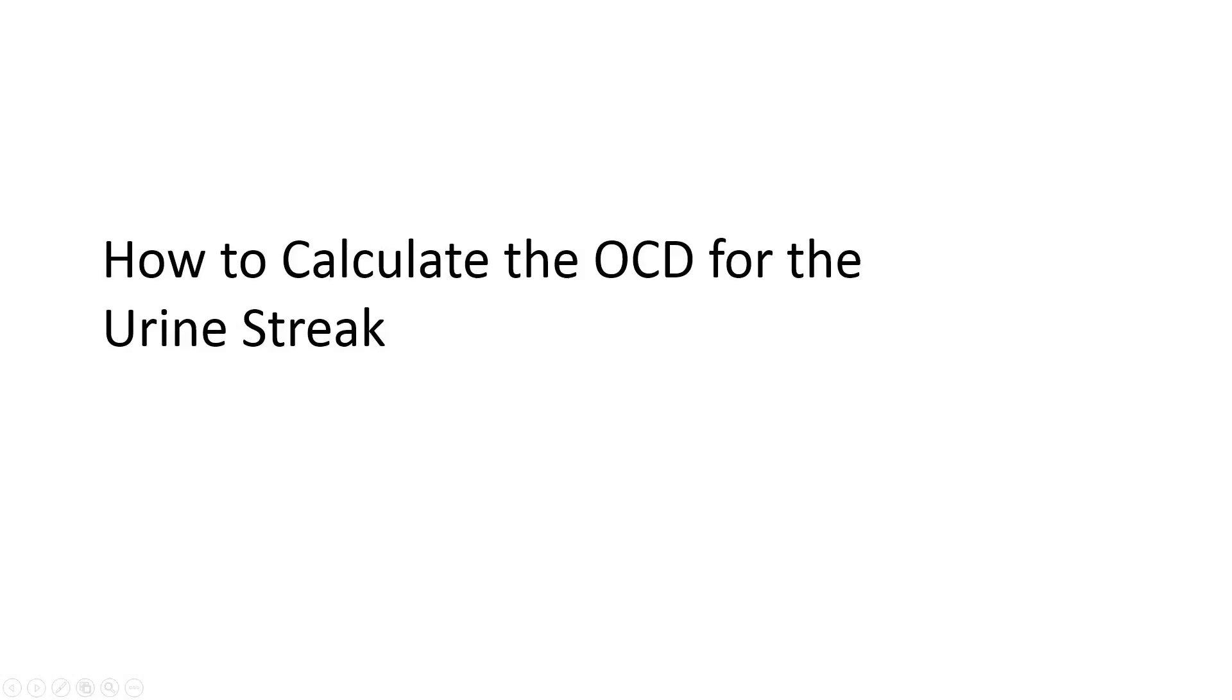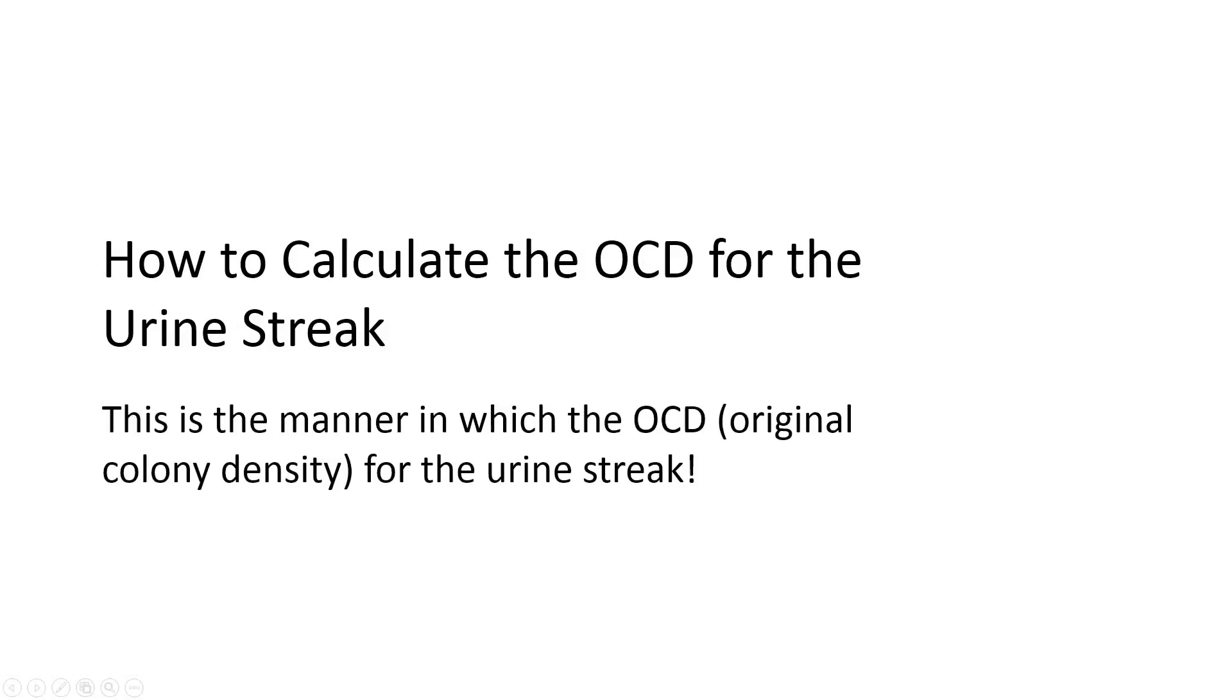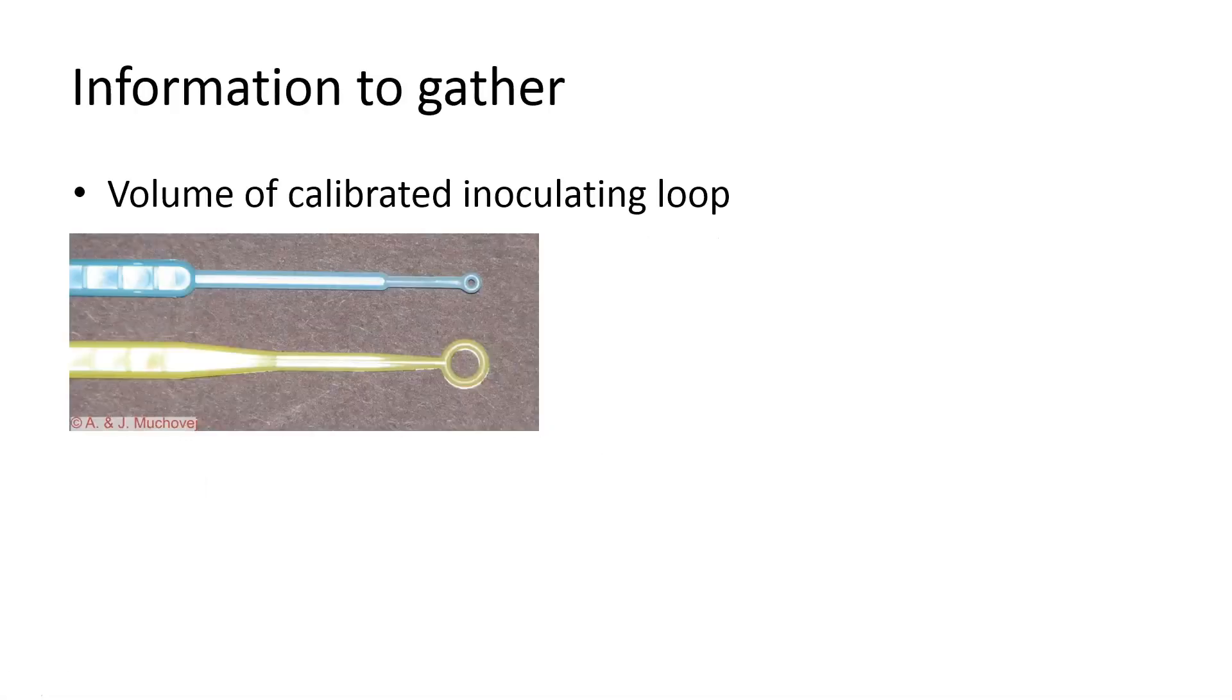This is the manner in which the OCD, original colony density, for the urine streak is calculated. Information we need to gather: the volume of the calibrated loop.